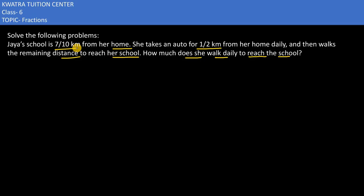So we have to take a look at how much walking distance she has. She has told us that the total distance is 7 by 10. Where? From home to school.